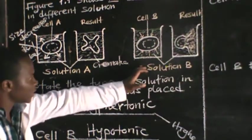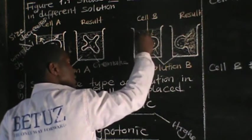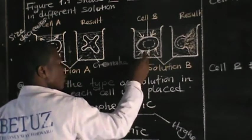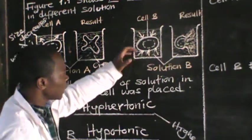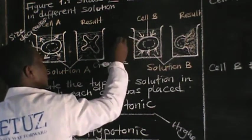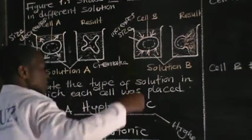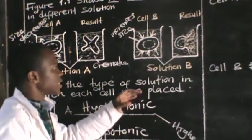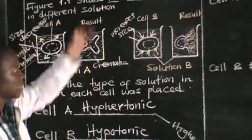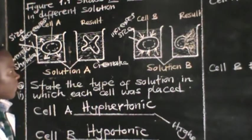We also have a situation where this red blood cell is gaining water by osmosis. As you can see, these arrows show water molecules entering into the red blood cell. As water keeps entering, this red blood cell increases in size. The increase in size makes this cell swell and eventually causes it to burst.